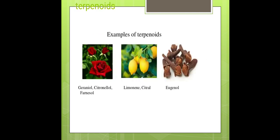Examples of terpenoids: geraniol, citronellol, and farnesol — obtained from the rose flower. Limonene and citral are terpenoids obtained from lemon. Eugenol oil is another terpenoid example. These are examples of terpenoids obtained from different plants.